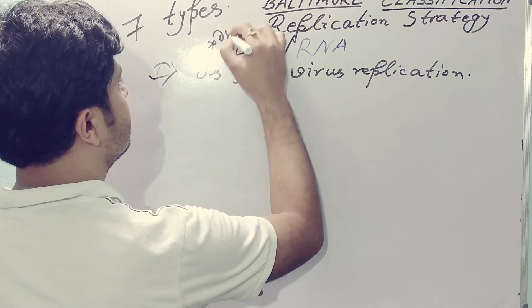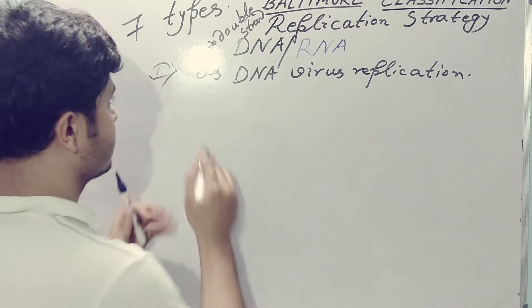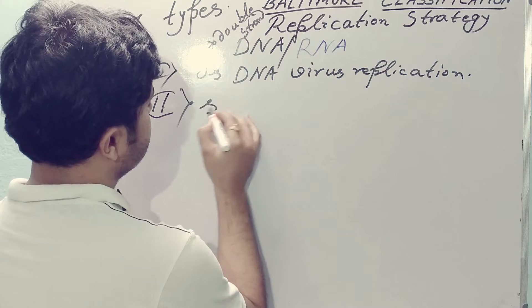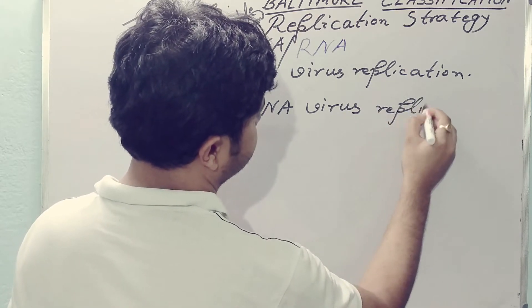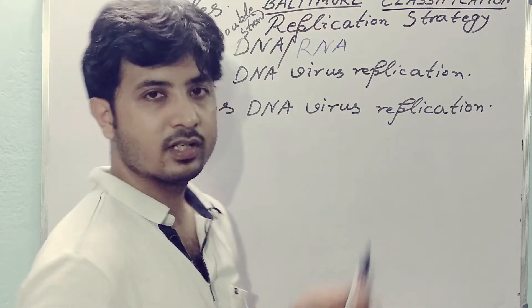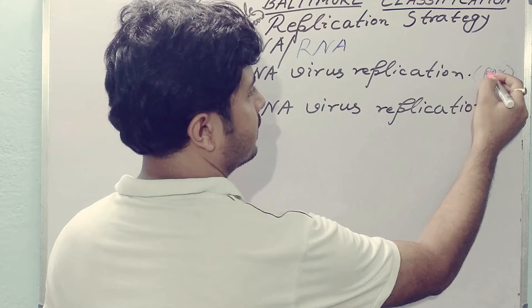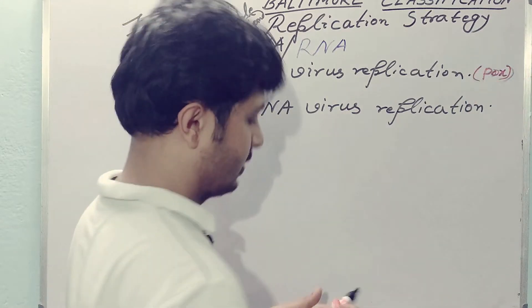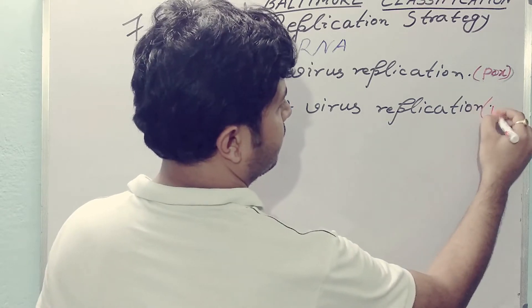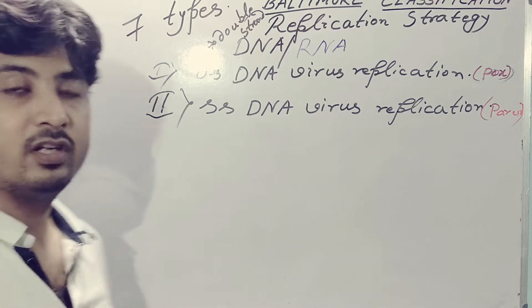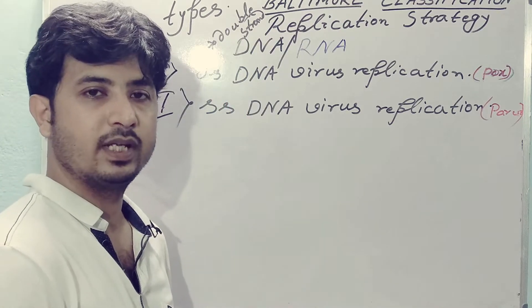DS means double-stranded. As an example of double-stranded DNA virus replication, you can take poxvirus. Now the single-stranded DNA virus is parvoviridae. These are the families of viruses which depend upon this particular replication strategy. As you can see, this is a DNA virus — it can directly go from DNA to mRNA to protein.